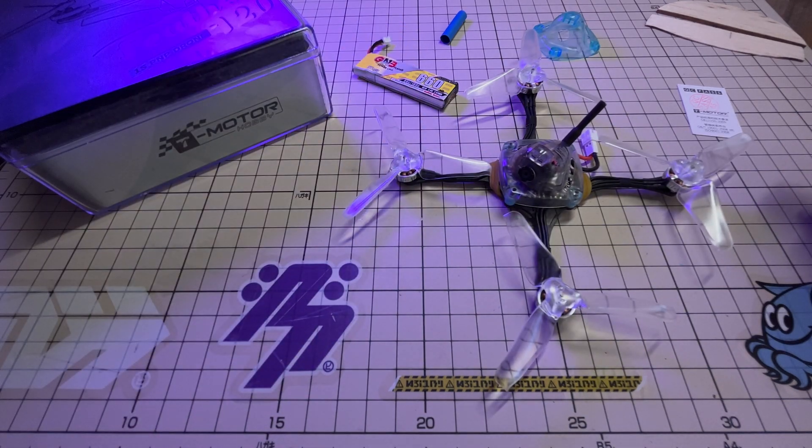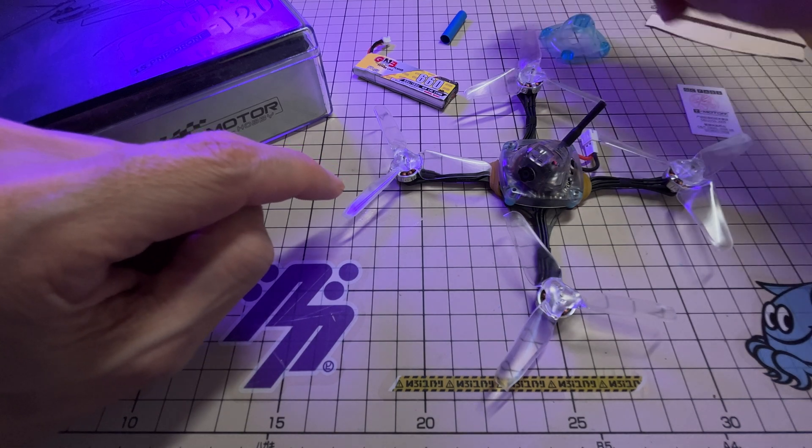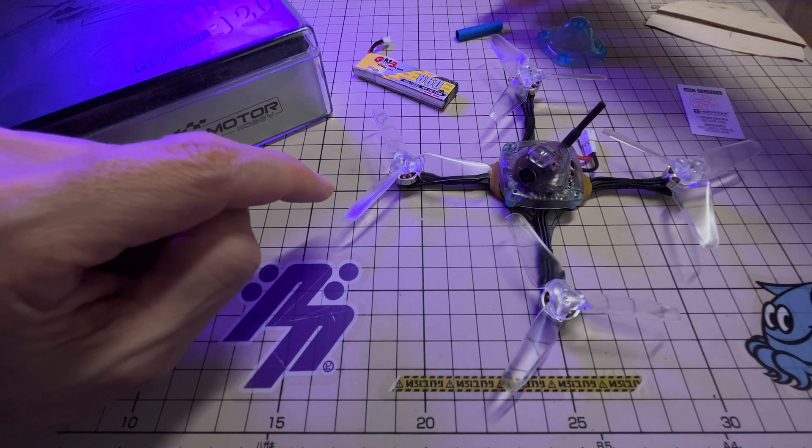And this is quite a bare-bones kit. It just comes with the quadcopter, one set of props, and a spare canopy, and a little spare piece of blue heat shrink, I guess, if you want to make the antenna blue to match the blue canopy.